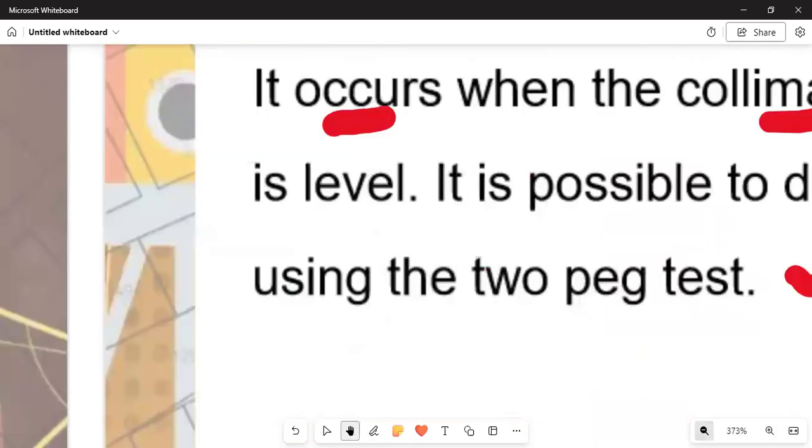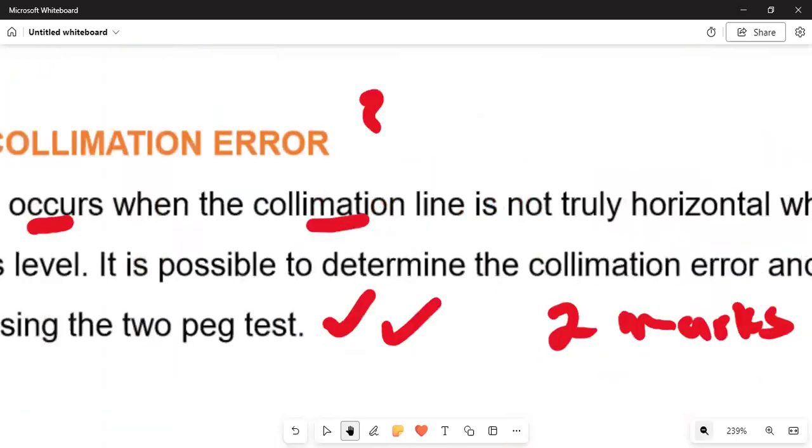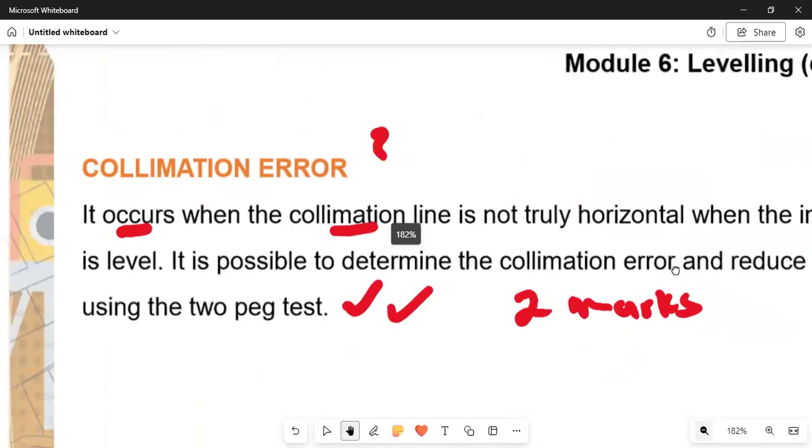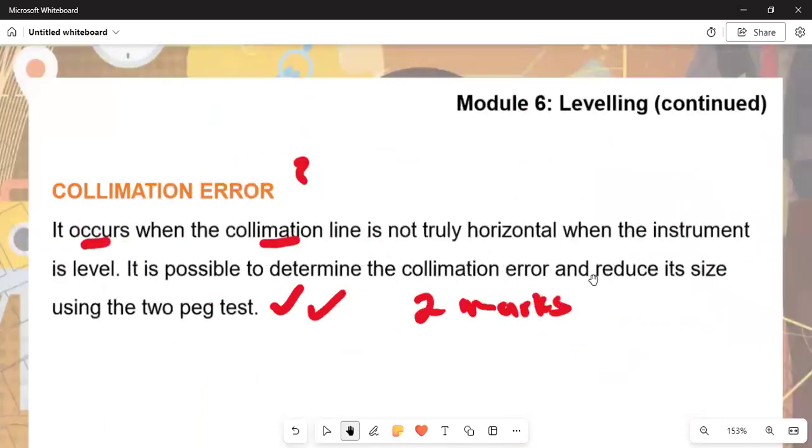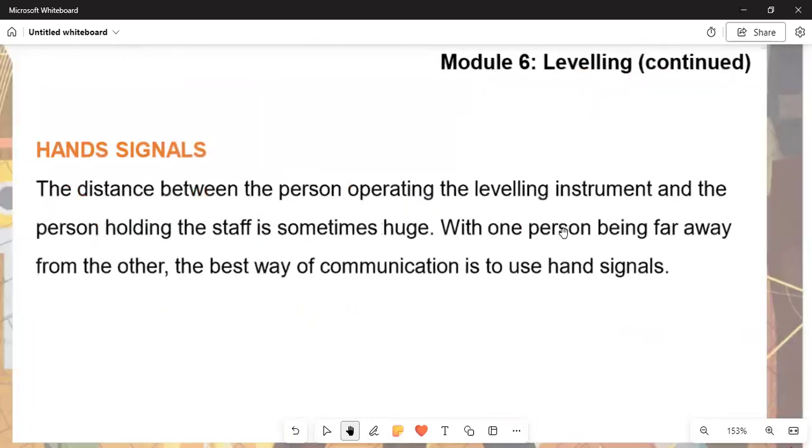We must understand that there is important work that we need to consider, and then we can talk about now the collimation error that can occur. It occurs when the collimation line is not truly horizontal. It is possible to determine the collimation error and reduce its size using the two pegs test.